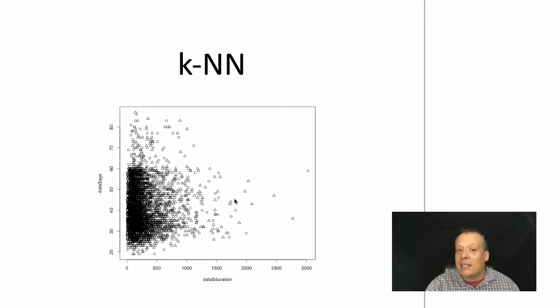And this may not be the best classifier either, because it doesn't clearly show that the triangles and circles are different than each other. In the best possible world, if you're going to use k-nearest neighbors, you would like to see that the triangles and circles when you plot them based upon the features that you're looking at are very distinct from each other. And we don't see that here.